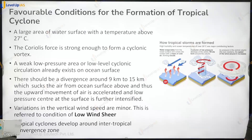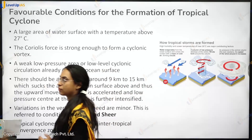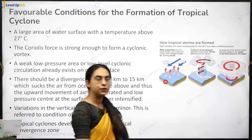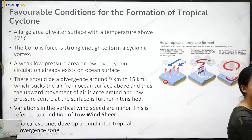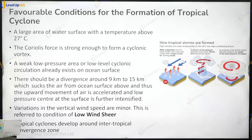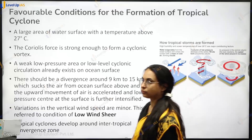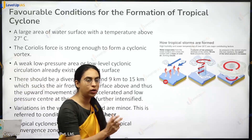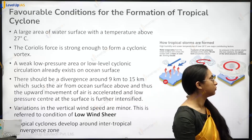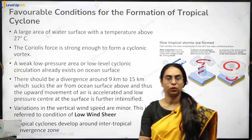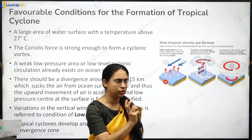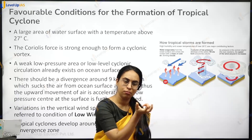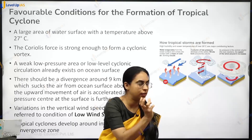Condition two: Coriolis force should be strong enough to form a cyclonic vortex. There is a low pressure depression formed, and the Coriolis force causes circulation to begin — the cyclonic vortex is something that rotates.